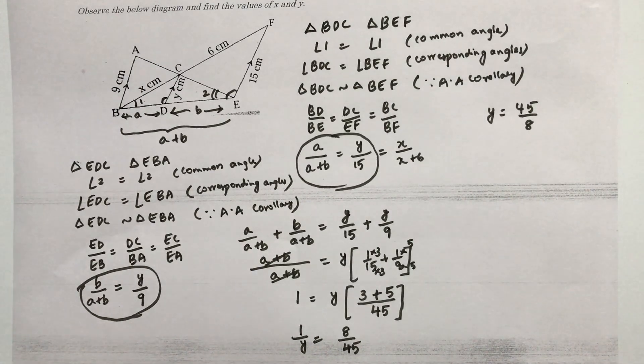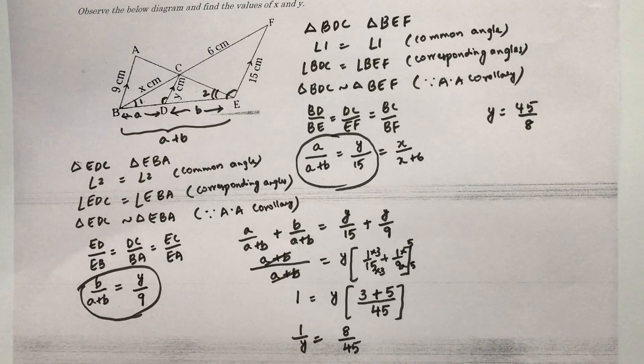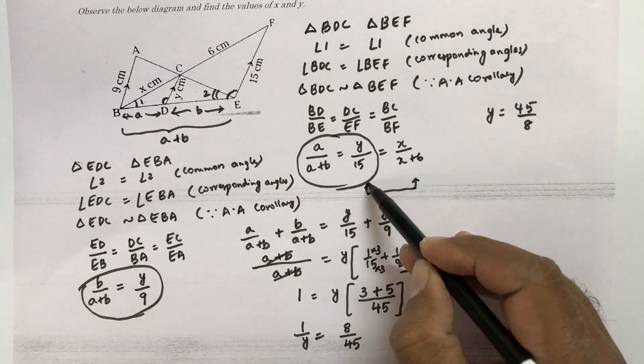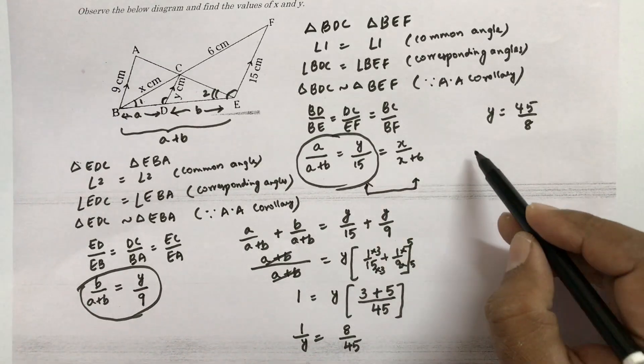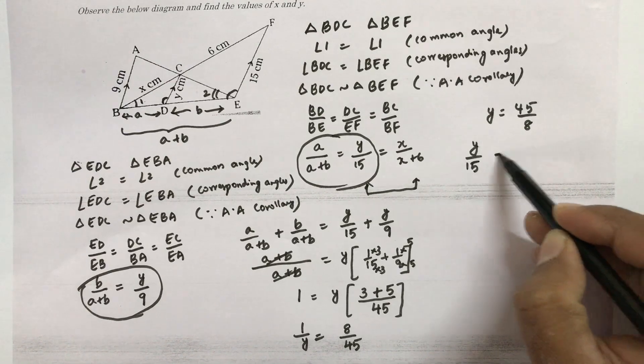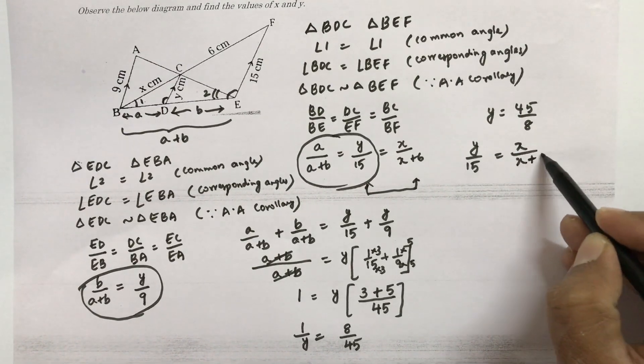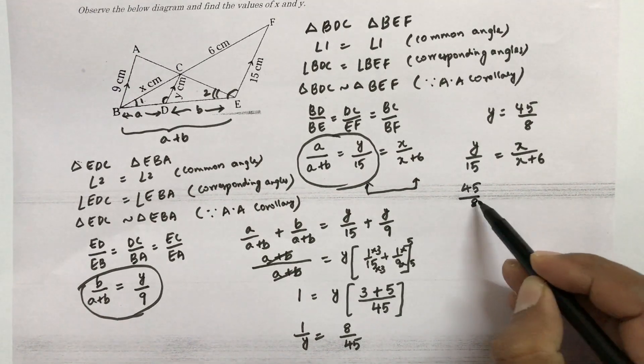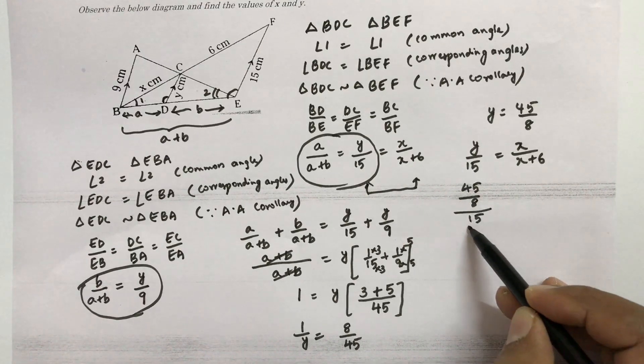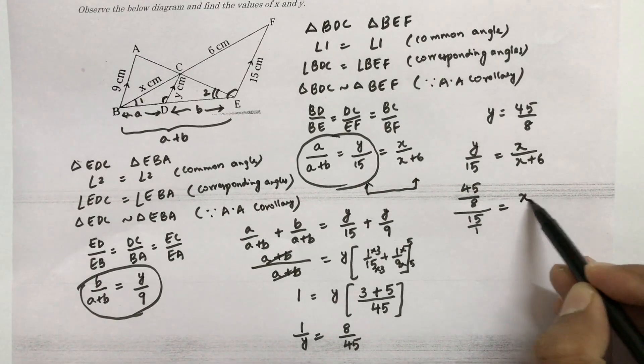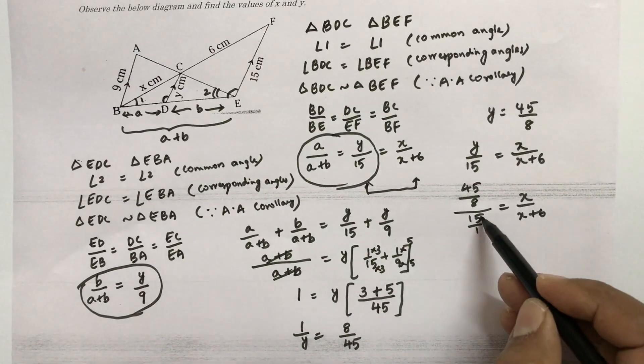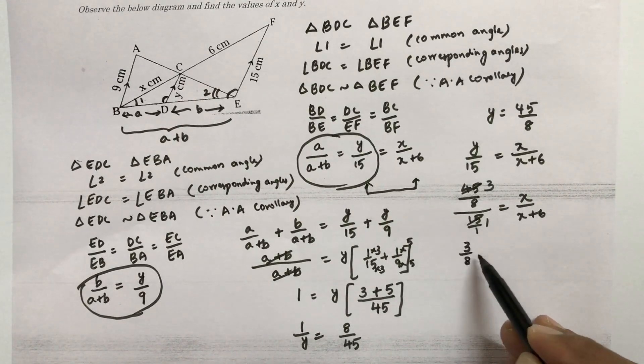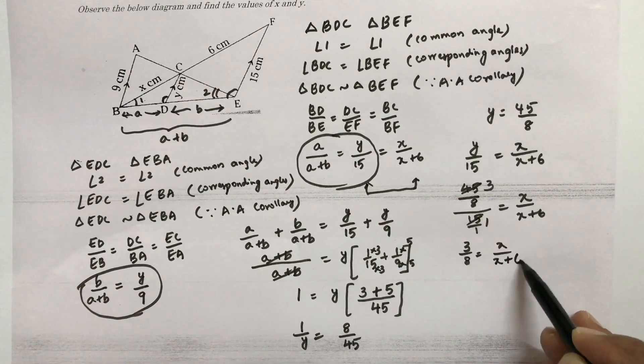The value of Y is 45 by 8. Now to get the value of X, so here we don't have X. So we need to equate these two. So Y by 15 equals X by X plus 6. What is the value of Y? Y is nothing but 45 by 8 by 15. 15 times 3, so 3 by 8 equals X by X plus 6.